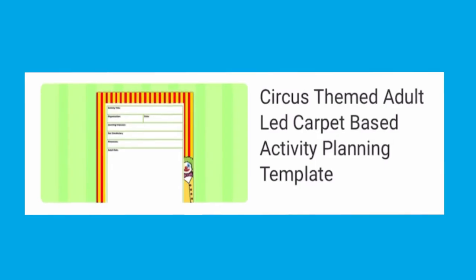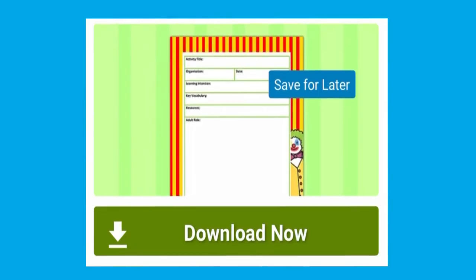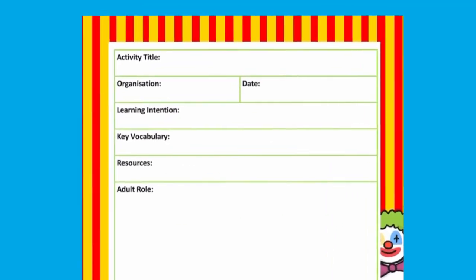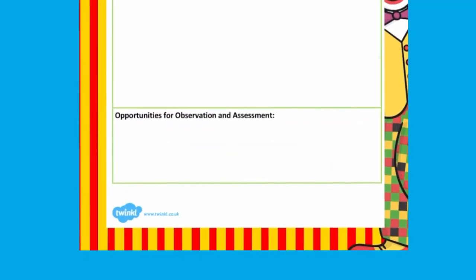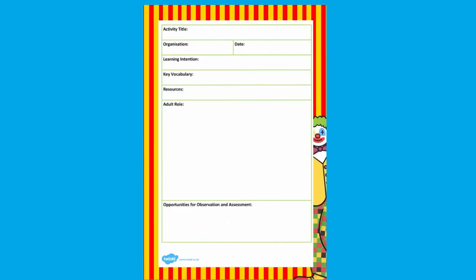Our adult-led carpet-based activity planning template is fully editable and includes space for a learning intention, key vocabulary, resources, details of the adult's role and opportunities for observation and assessment, as well as individual child focus to ensure those children who need that extra support are catered for.